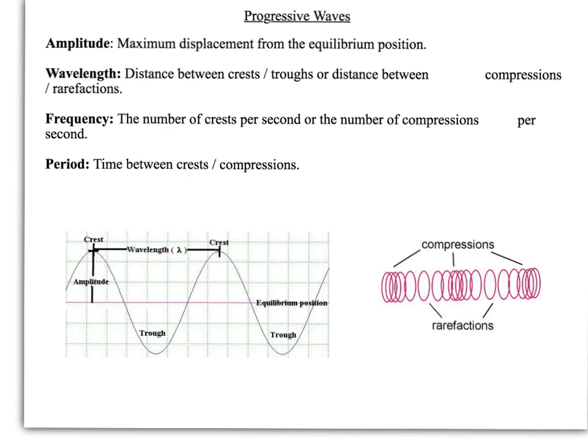The period is the time between crests. So if a crest goes through, you start your stopwatch and you stop it when the next crest comes through. That gives you the time period of the wave. You can do the same thing with the compressions of a longitudinal wave. The frequency would be the number of crests going through in a second. So you time for a second, count how many crests have gone through - that tells you the frequency of the wave. These things will form part of the wave equation, which we'll come onto later.